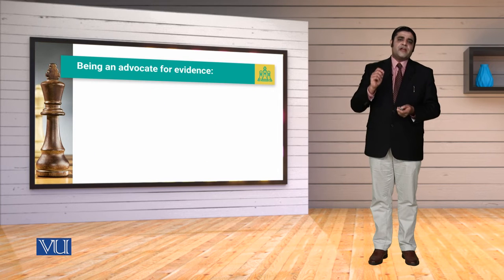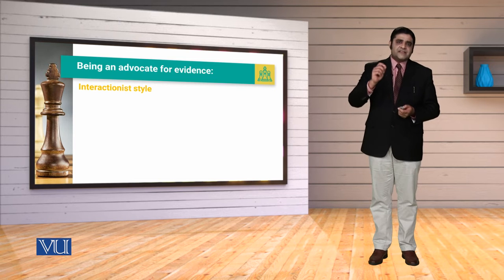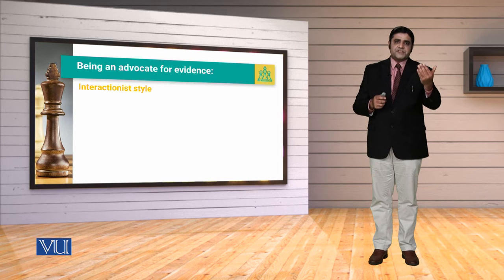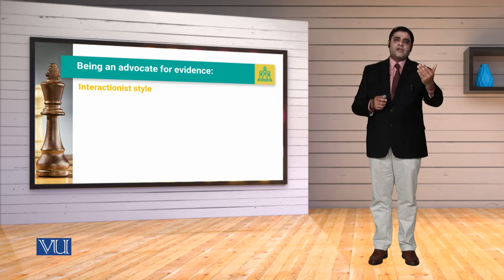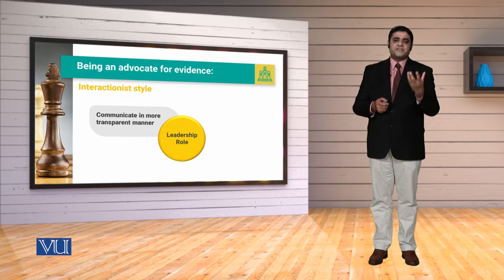Being an advocate for the evidence, we must remember that we have to use the interactionist style. Interactionist style means that it is going to be a two-way communication, in which you will also listen to your followers and communicate their point of view. When we talk about the leadership role, the first thing is to focus upon communication and its transparency.